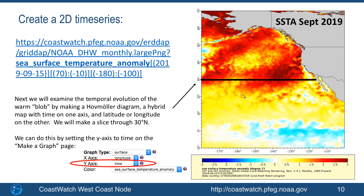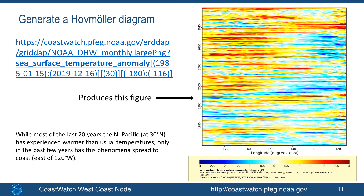We can see how long this heat wave has been around by making a Hovmöller graph. To do that, we will take a cross section along 30 degrees north, the line indicated on the map, and plot it over time. We can do this by going to the Make a Graph page and changing the y-axis from latitude to time. Here we are looking at SST along 30 degrees north from 1985, at the bottom of the screen, to the end of 2019 at the top of the figure. We can see that while most of the last 20 years have been warmer than usual in the central Pacific, only in the past few years has this phenomenon spread to the coast, as can be seen in the upper right-hand graph east of 120 degrees west.